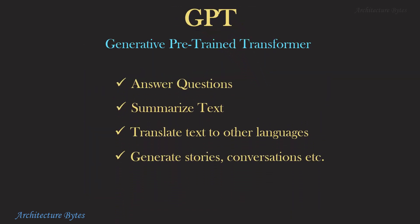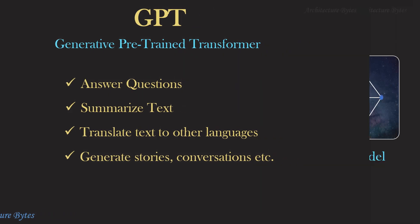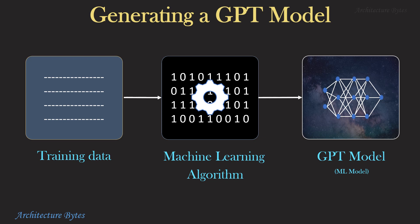GPT, or Generative Pre-trained Transformers, are a family of large language models. GPT models are artificial neural networks based on the transformer architecture, pre-trained on large datasets of text, and able to generate human-like text. They can answer questions, summarize text, translate text to other languages, generate stories, conversations, and more. A GPT model is a machine learning model generated by an algorithm that processes lots of training data. Programmers define the architecture and rules for building it — they do not create the neurons or weights, as that happens during the training process.